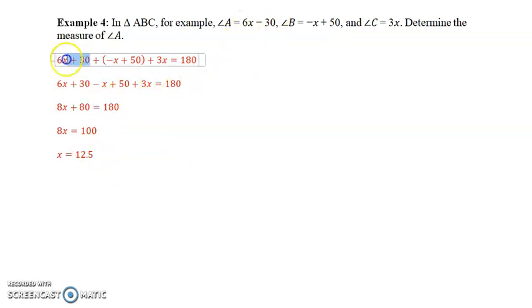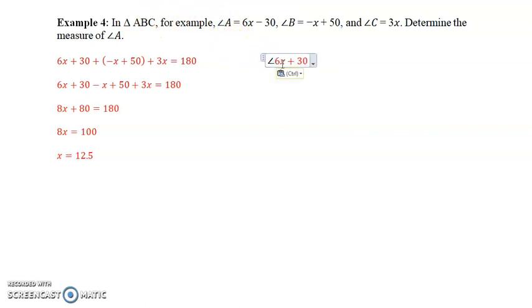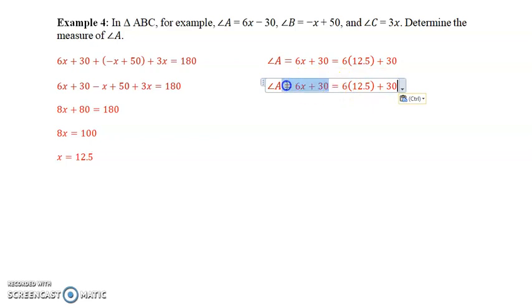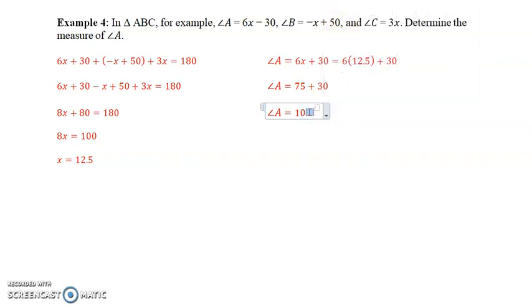So, to find angle A, we know angle A is equal to 6x plus 30, which is equal to 6 times 12.5 plus 30. So, angle A equals 75 plus 30 which equals 105 degrees. And we have to put the degrees symbol in your final answer.